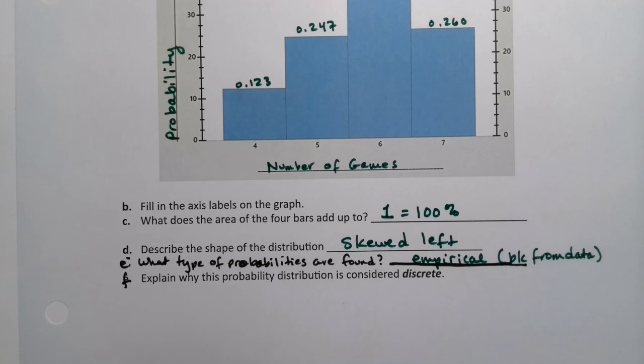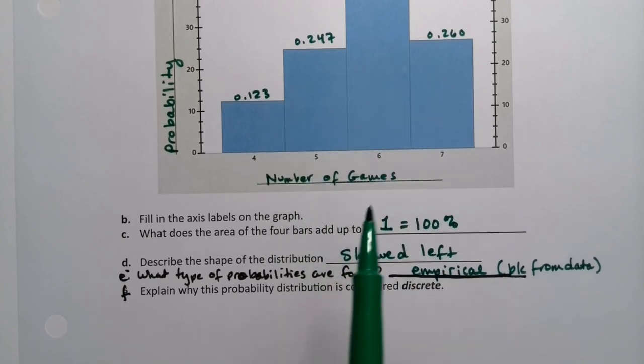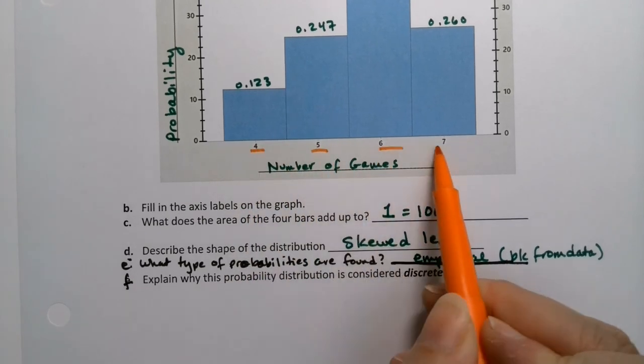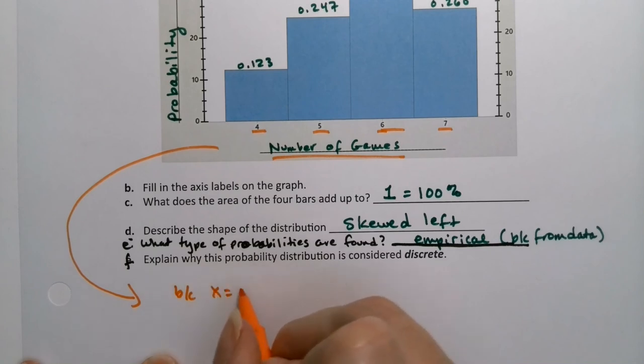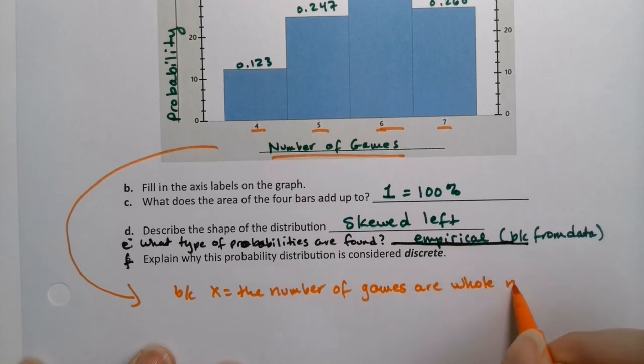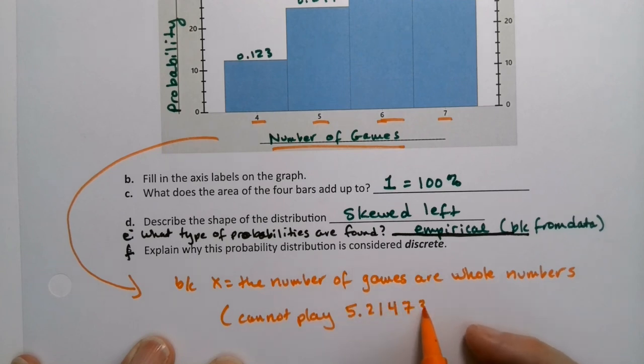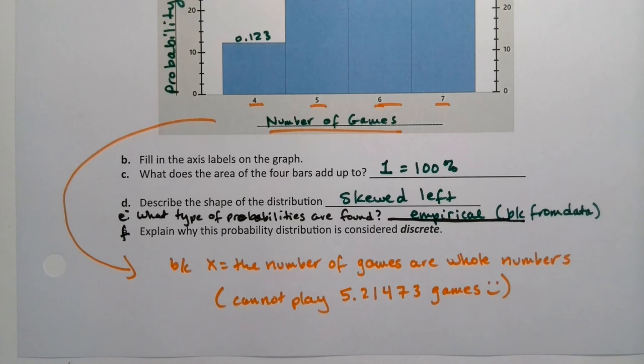And then the kicker, why is this a discrete probability distribution? We know it's a probability distribution because it adds up to one, but why is it discrete? And it has to do with the number of games, right? This x-axis right here, these numbers right here, they're your answer for down here, right? Because the number of games, which is your x variable, can only be whole numbers. In other words, you cannot play, in the NBA finals, you cannot play 5.21473 games, right? That's not possible. And so therefore, it has to be discrete, have to be whole numbers. Decimals are not possible for this particular type of data.